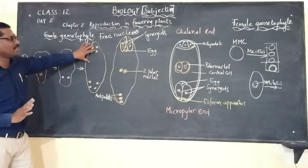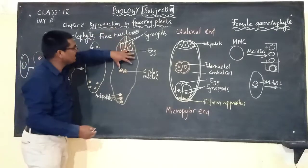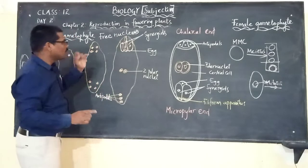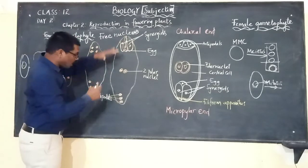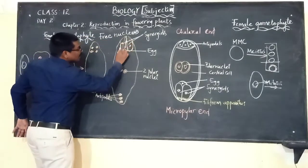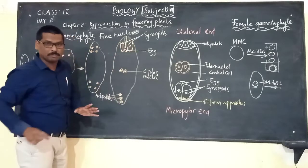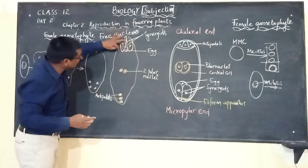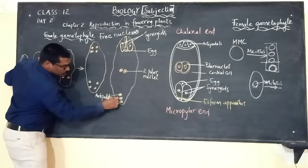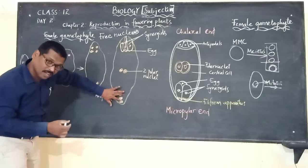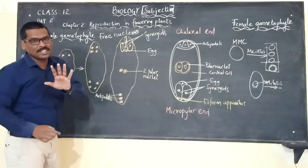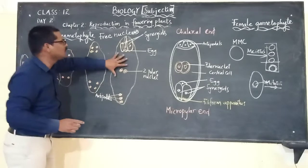When cell wall formation eventually takes place, six out of eight nuclei are covered by cell walls. At one pole there are three cells, and at the opposite pole another three cells. But the two nuclei present at the center do not have cell wall formation around them.